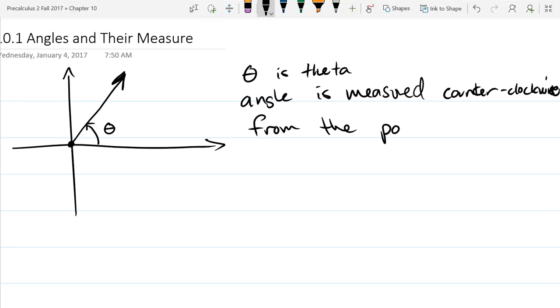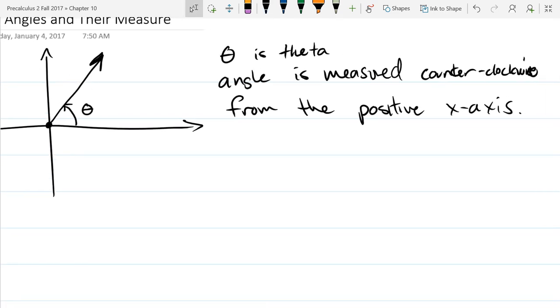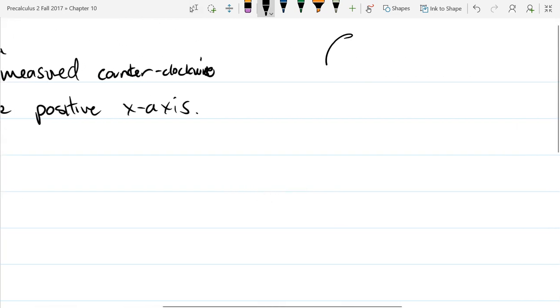You have been measuring angles for a very long time on a clock. So if I draw a really fast clock over here, on your clock, generally you're going to measure how far you traveled clockwise from the positive y-axis. So you've been measuring angles a while, just measuring them rotating the other direction starting in a different initial position. We usually count off of 12, we consider that as zero, and then we measure how far something has rotated past straight up.